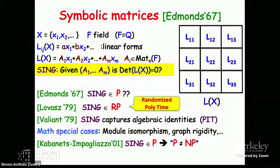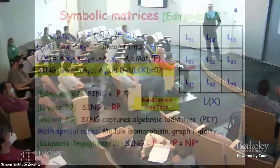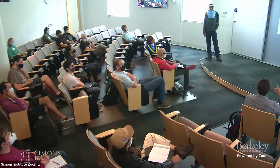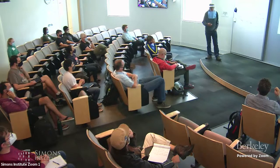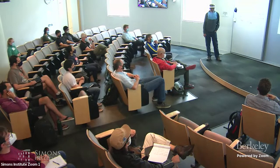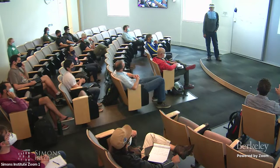Q: Is there anything to gain by using higher-order polynomials rather than linear forms? A: No — you can reduce higher-order polynomials to linear forms; you pay in the description size but there's nothing to be gained. Q: Are there other examples where de-randomization implied P ≠ NP? A: No, this is a really special problem.